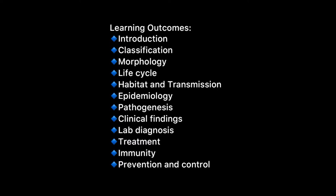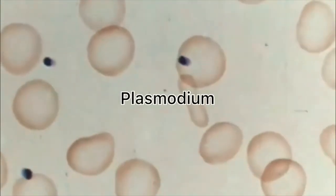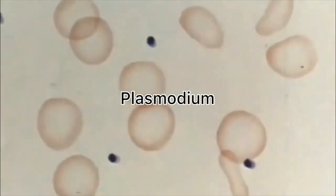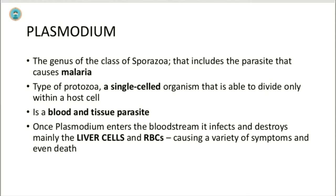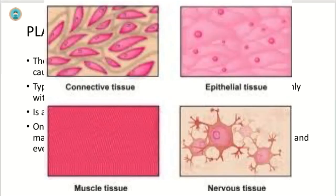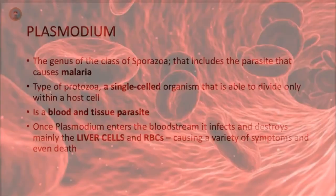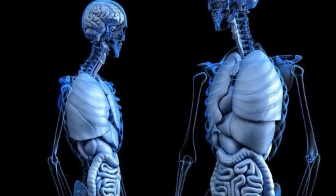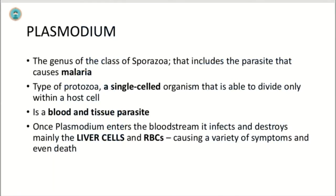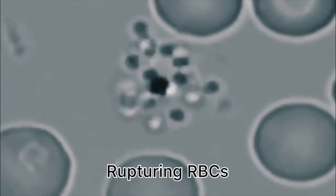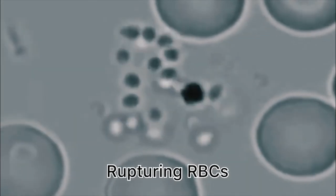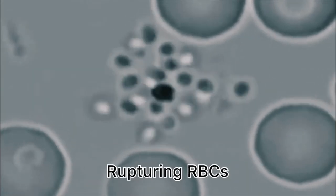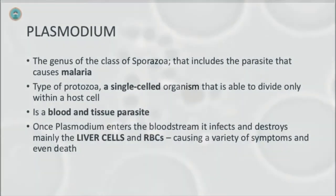Plasmodium belongs to the genus of the class Sporozoa and is responsible for causing malaria. It is a type of protozoa, a single-celled organism that is able to divide only within a host cell. It is a blood and tissue parasite, meaning it infects blood cells including erythrocytes and also infects tissue cells such as hepatocytes. Once plasmodium enters the bloodstream, it infects and destroys mainly liver cells and red blood cells, causing a variety of symptoms and even death.